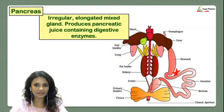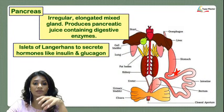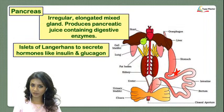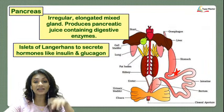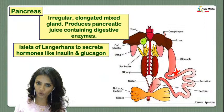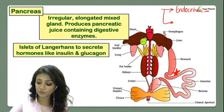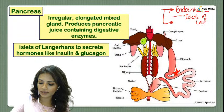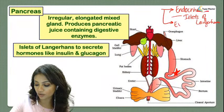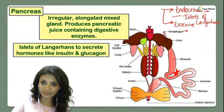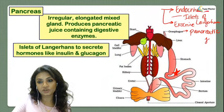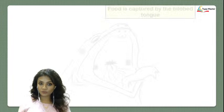The hormones produced by the pancreas are insulin and glucagon, from the endocrine part of the pancreas. Those cells in the endocrine part are called the islets of Langerhans. So the pancreas has two parts: the endocrine part, made up of islets of Langerhans, and the exocrine part, made up of cells that secrete pancreatic juice.